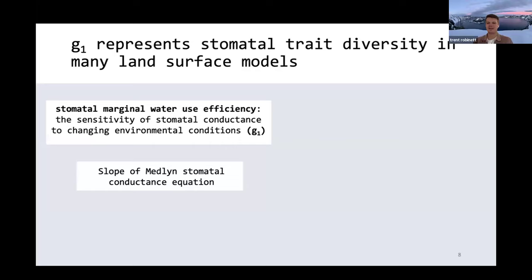Throughout this presentation, I'm going to be talking a lot about g1, which should be known to most people as the slope of the Medlyn stomatal conductance equation. What this plant trait really does is dictate how much water is lost through stomata for each unit of carbon gained for a plant in a given location.